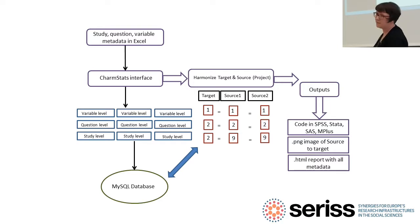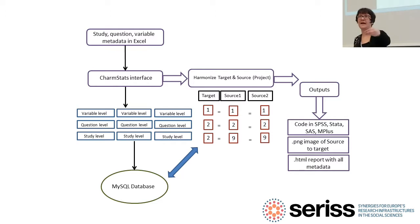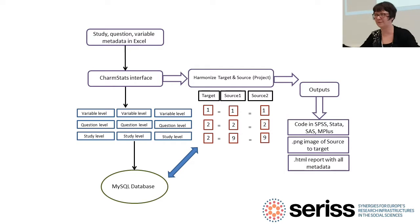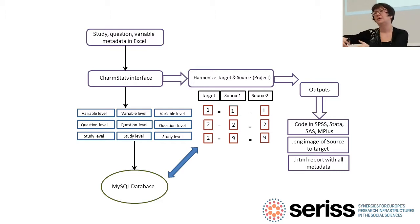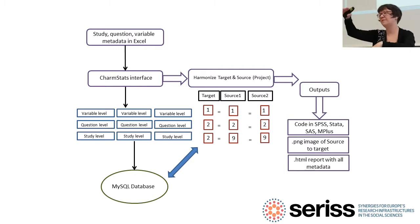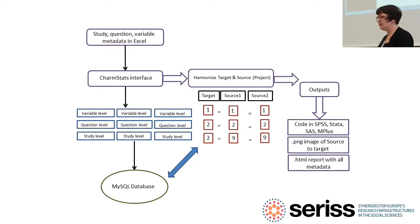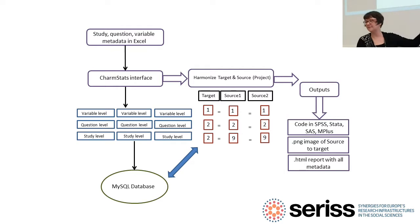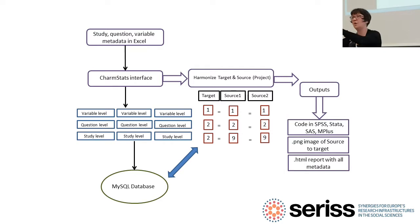By opening the software and pulling in either Excel templates or SPSS files, we do a mass import where we treat the question label in SPSS or Excel as the question-level variable. We add the study information, and all variables imported from that study are connected to that study-level information. Stata is proprietary so we have to go through SPSS because it's free. Once it's in your MySQL database, you can fetch it to put together information in your projects — variable-level, question-level, and study-level metadata are all connected.